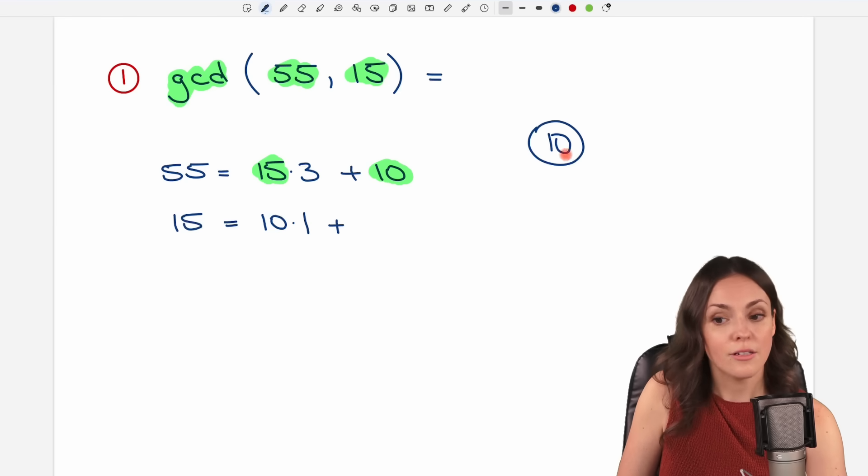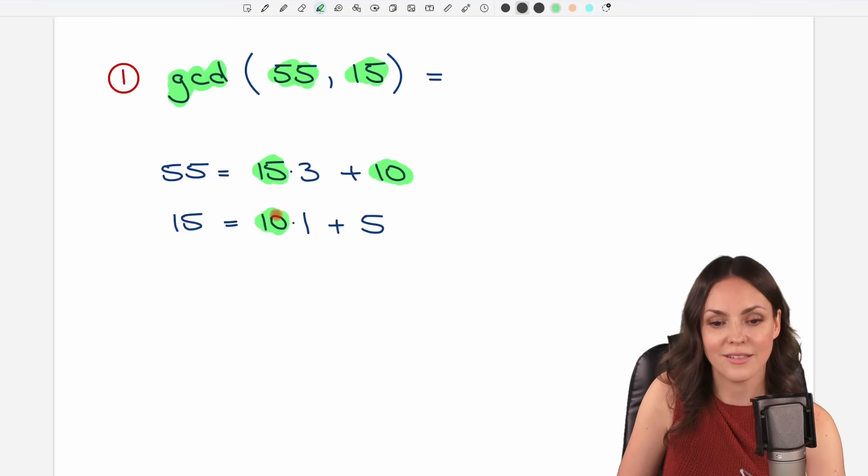And then we're going to have a remainder because it's not 15 yet, right? So from the 10 to the 15, it's 5 steps. And the same process again. We have smaller numbers now. The 10 here and our new remainder.